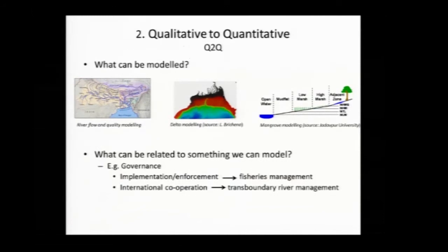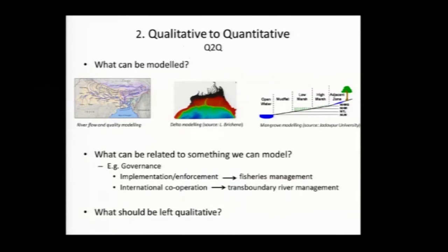We looked at where we could relate governance to something we could model. For example, how implementation and enforcement can affect fisheries management, or how different levels of international cooperation could be represented through different river flow management rules. We also looked at what aspects of the qualitative scenarios are best left in a more qualitative form — still looking at the influences of management options but not incorporating them in the modelling process.